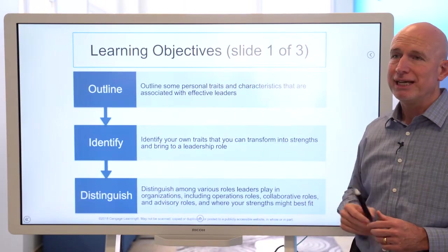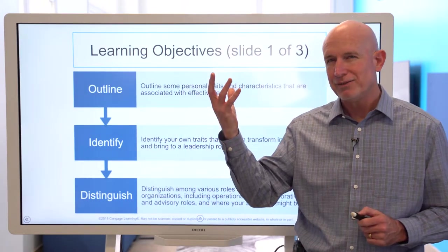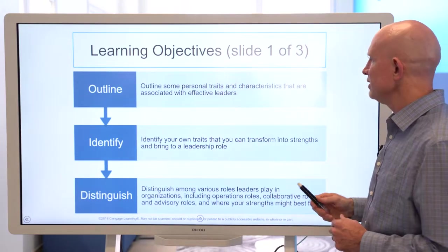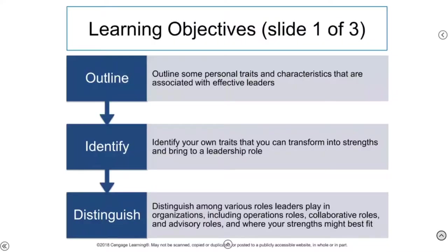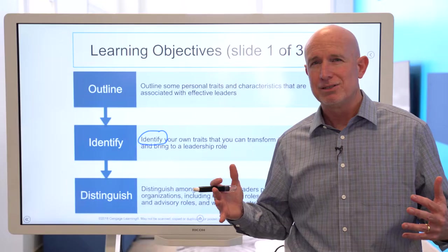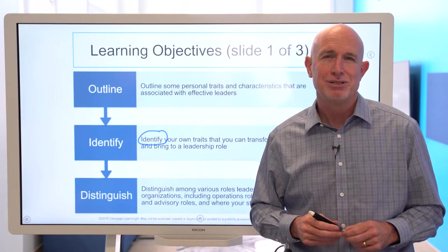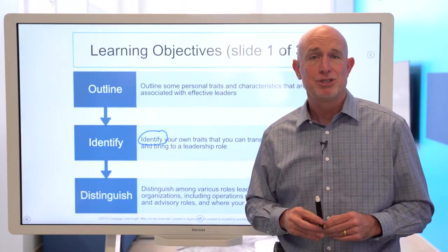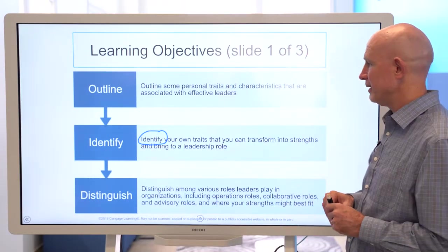Number one, we want to outline some of the personal traits and characteristics that are associated with effective leaders. When you think about an effective leader, what traits or characteristics do you think those leaders might possess? We then want to help you identify your own traits that you can transform into strengths and bring to a leadership role as you graduate. Strengths-based tests in your chapter will help you do this, and there is also a strengths-based book you can purchase to know more about your personal strengths-based leadership acuity.